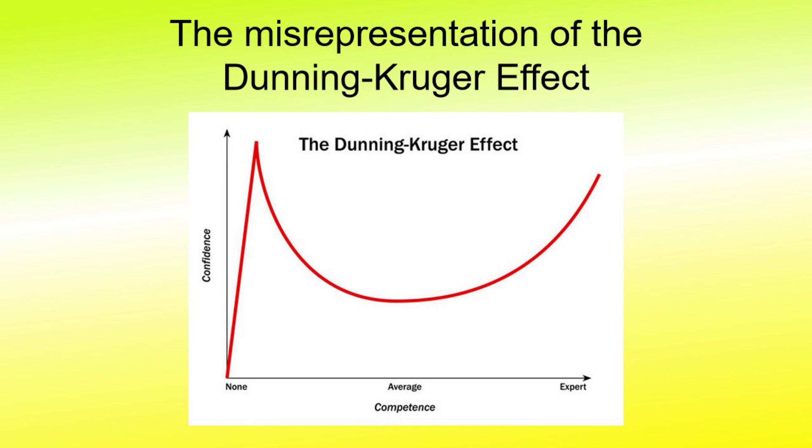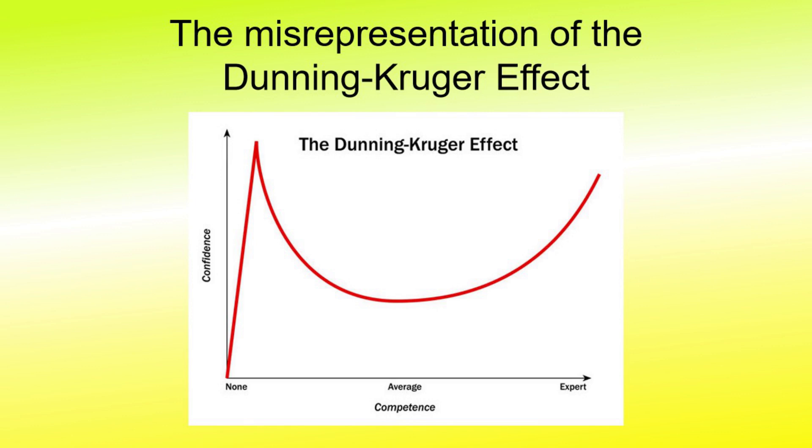This is the standard image used to depict the Dunning-Kruger effect. It shows a steep increase in the level of confidence while you are ignorant on a topic, quickly reaching a peak of confidence that then declines as you learn more and finally rounds up to a lower level of confidence as you become an expert.